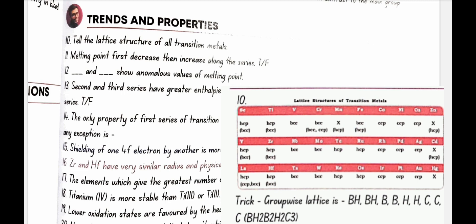As you can see in the group wise, for scandium, it is HCP and BCC both, so it is BH. Then for technetium, it is also HCP and BCC, so BH again. Then for vanadium, it is only BCC. Then for chromium, again BCC. Then for manganese, it is HCP, so H. Then for Fe iron, it is HCP, again H. For cobalt, it is CCP, nickel also CCP and copper also CCP. So this is a trick: BH, BH, BH to BB, HH, CCC.